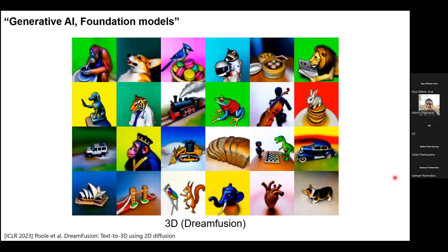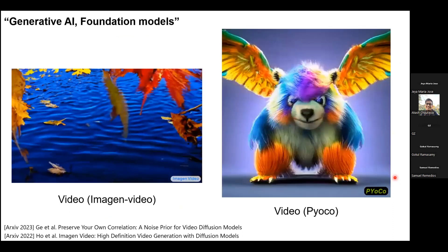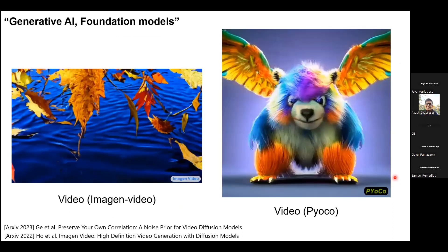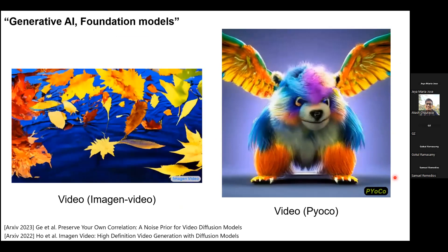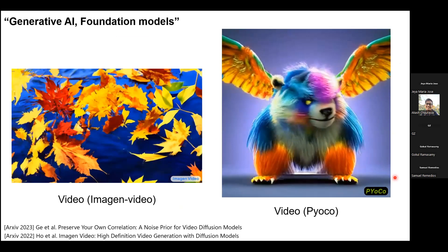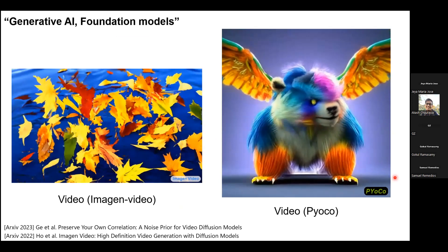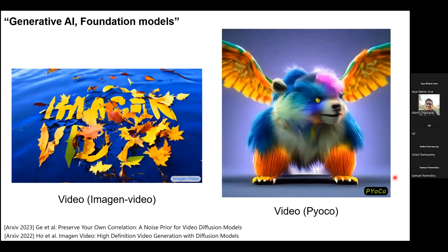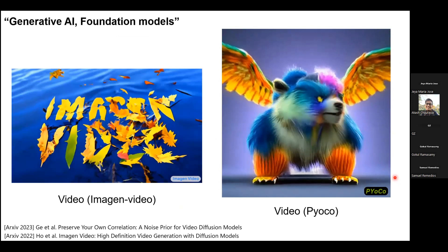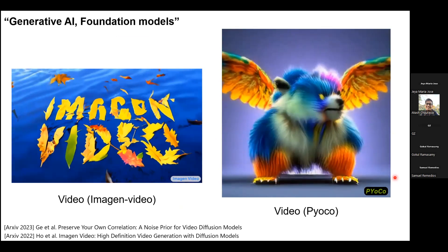Text and images are not the only ones considered nowadays. There are generative models for 3D and video as well. It's really amazing and even painful to see the rate of progress — when you wake up and open Twitter, you see yet another breakthrough, even though there was one just a few days ago.